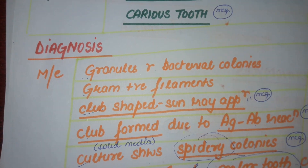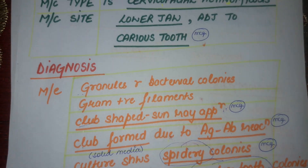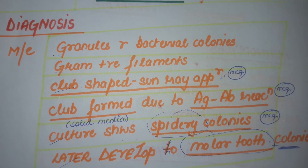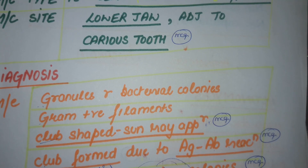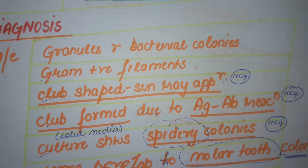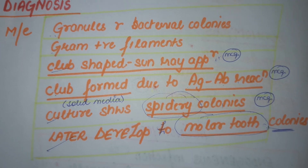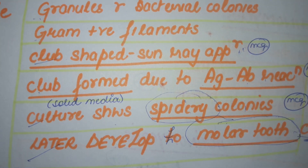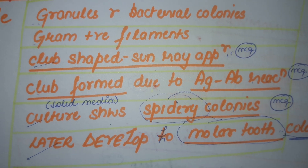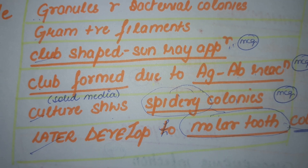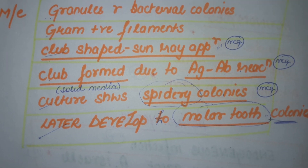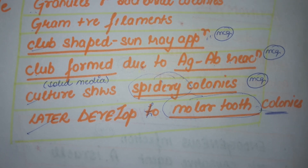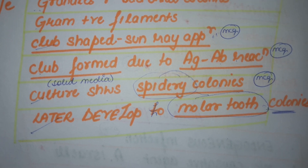Now on microscopic examination of Ectanomycoses, what we see are granules, which are basically the bacterial colonies — gram-positive filaments — which will be showing a club-shaped sun ray appearance. Very important point, mark it as well. These club-shaped appearances are formed because of the antigen-antibody reaction in the body.